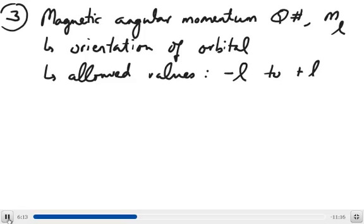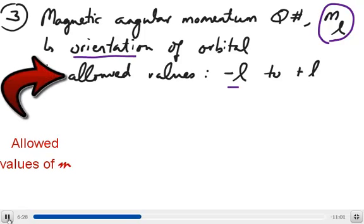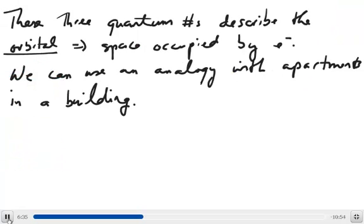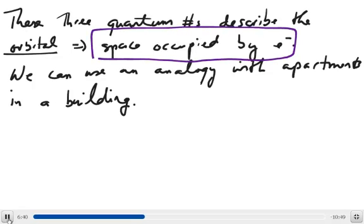The third quantum number is called the magnetic angular momentum quantum number. It represents the magnetic component of the angular momentum and describes the orientation of the orbital, with allowed values ranging from negative L to positive L. Together, the three quantum numbers describe the orbital — essentially the space occupied by the electron.